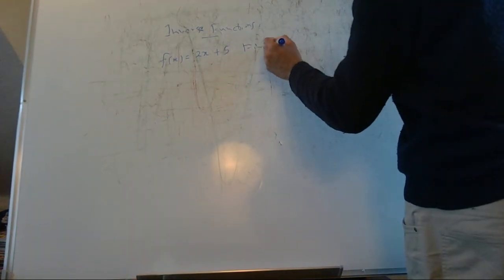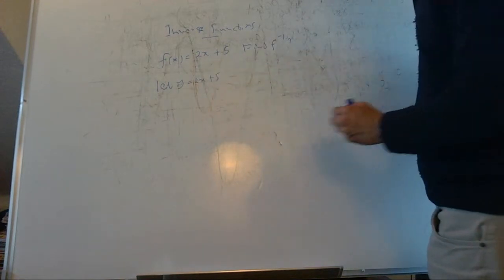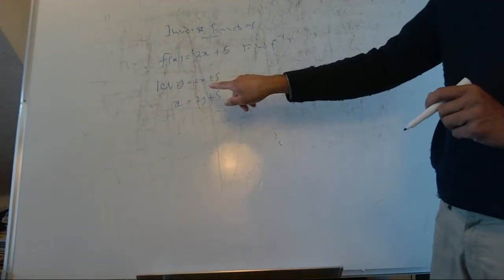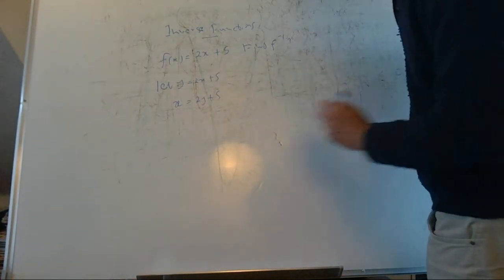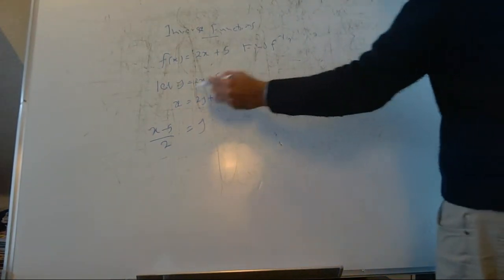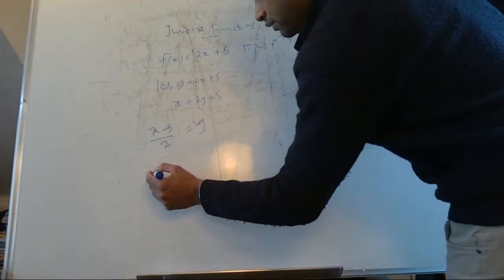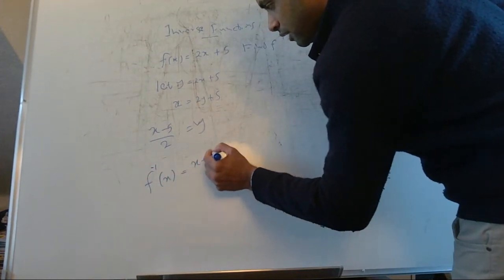To find f inverse, let y equal 2x plus 5, then swap x and y to get x equals 2y plus 5. Now make y the subject: x minus 5 over 2 equals y. So f inverse of x equals (x minus 5) over 2.